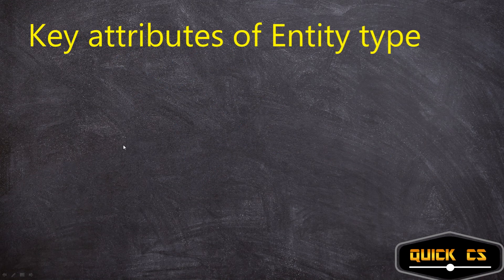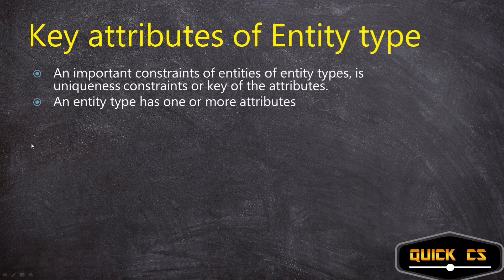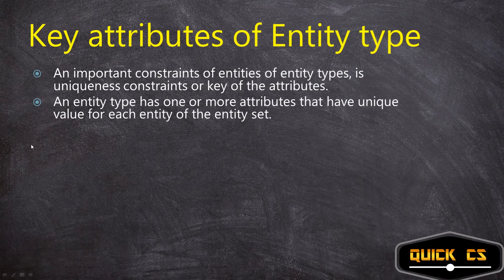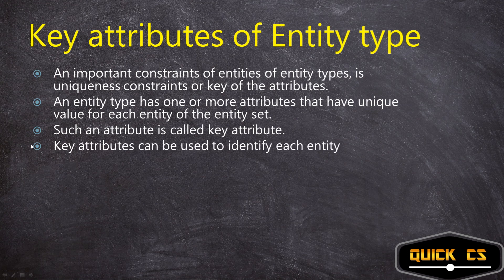Now, what are key attributes in an entity type? A key attribute is an attribute that can be used to differentiate between different entities. An important constraint of entity types is the uniqueness constraint — or the key of the attributes. Every attribute that can help us uniquely identify an entity is called a key attribute, whether it is a single-valued attribute or a composite attribute. It helps you recognize an entity or differentiate one entity from another, and its value is unique.